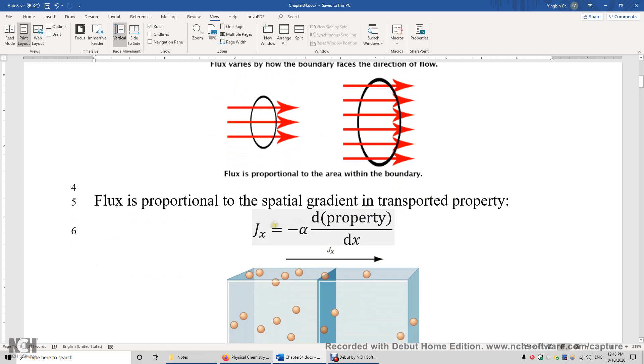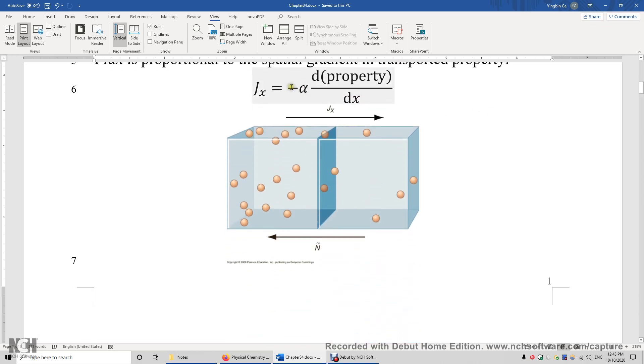The flux is proportional to the spatial gradient in the transported property. So I'm going to explain why there is a negative sign here.